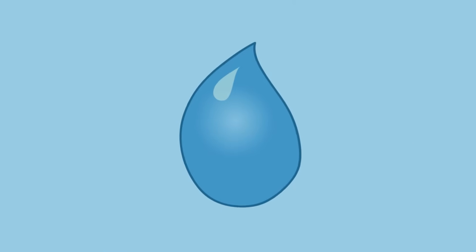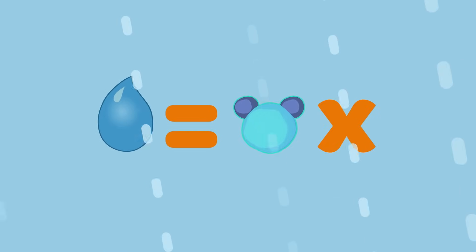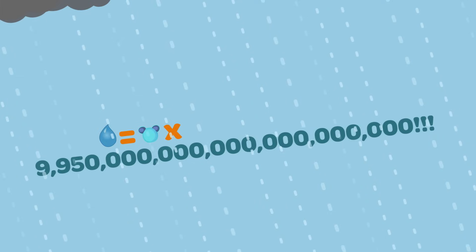They're like tiny little building blocks that make up everything around us. To give you an idea, there are almost 10 octillion water molecules in a single drop of rain. That's a lot of zeros.